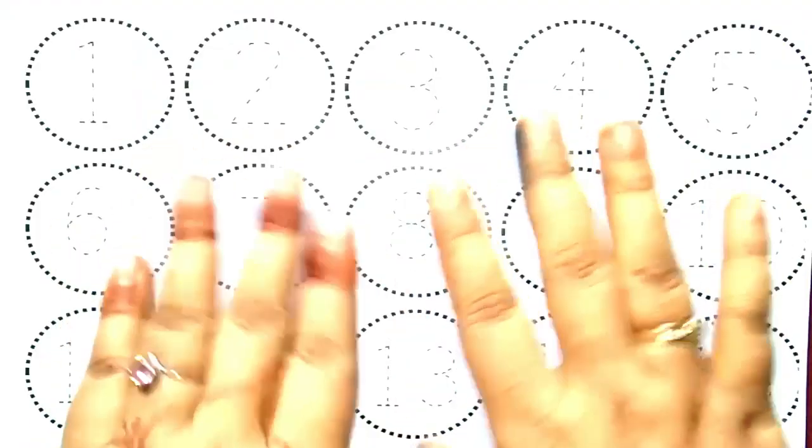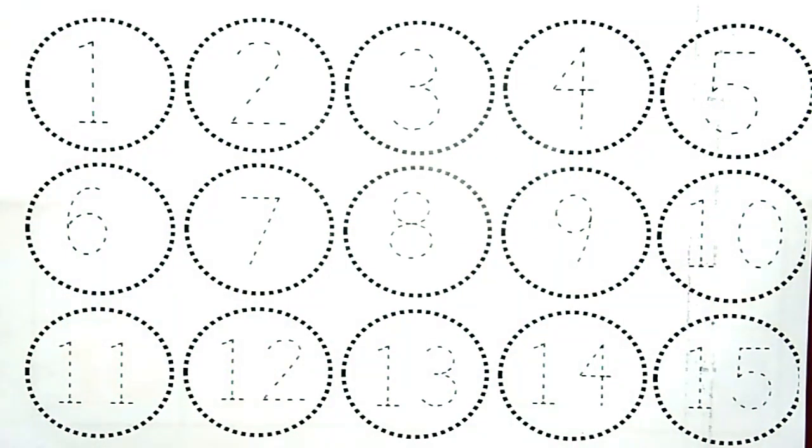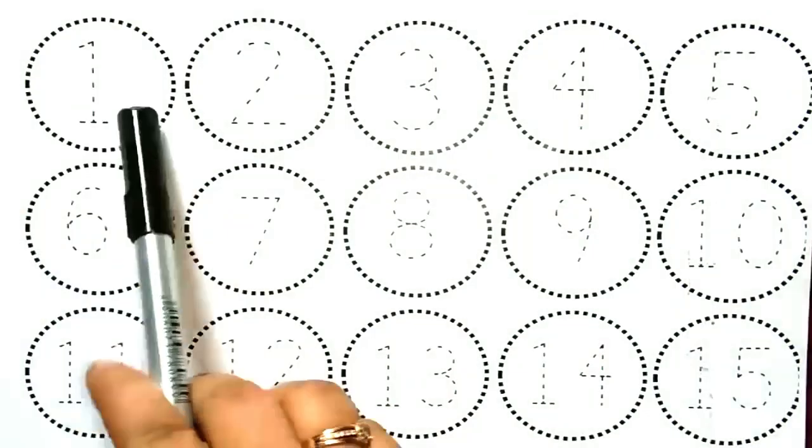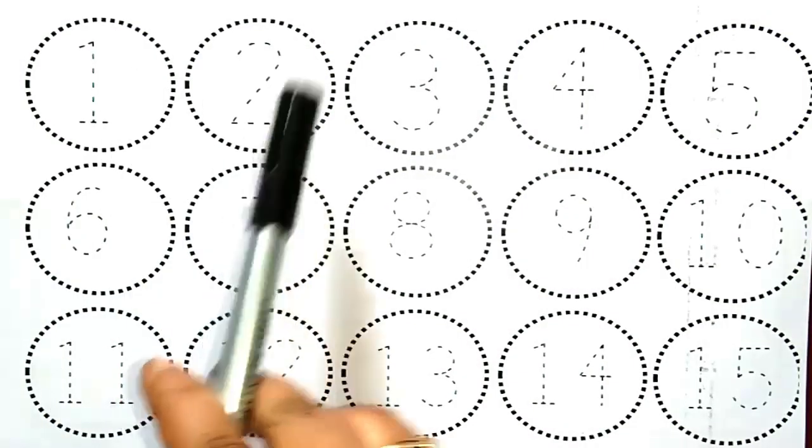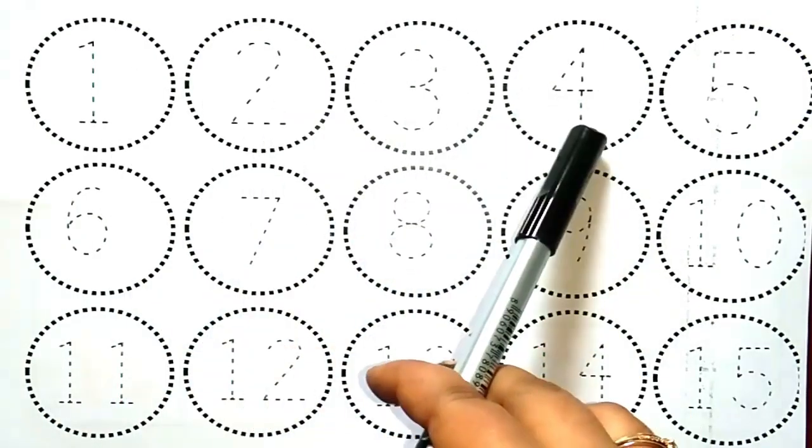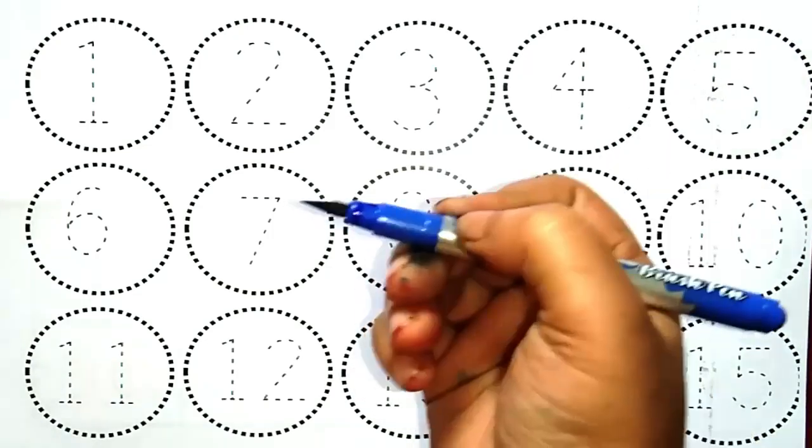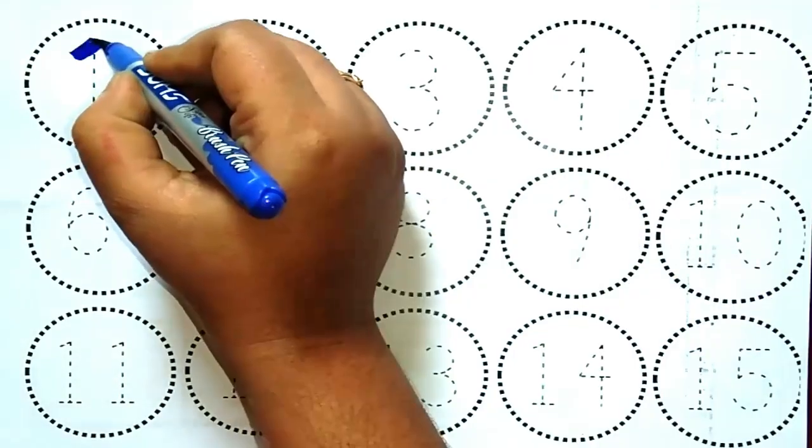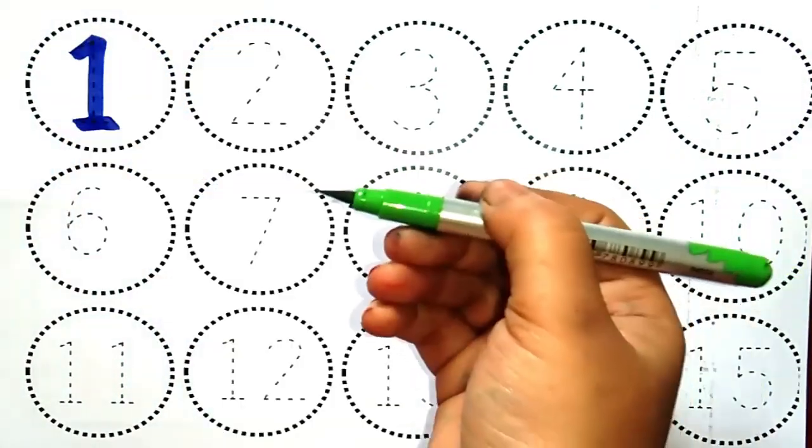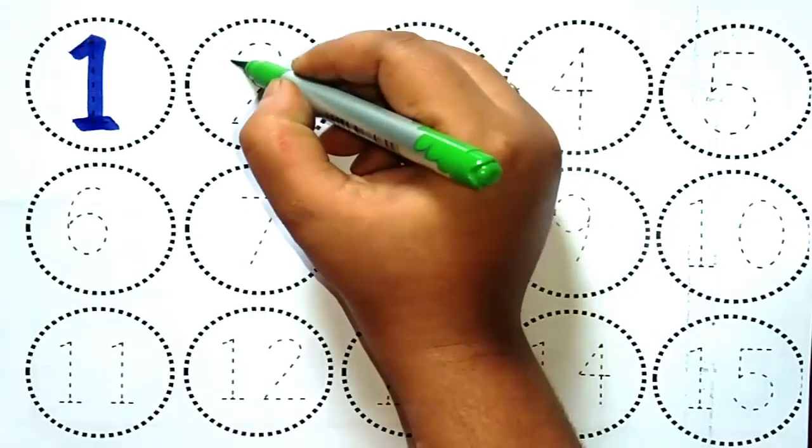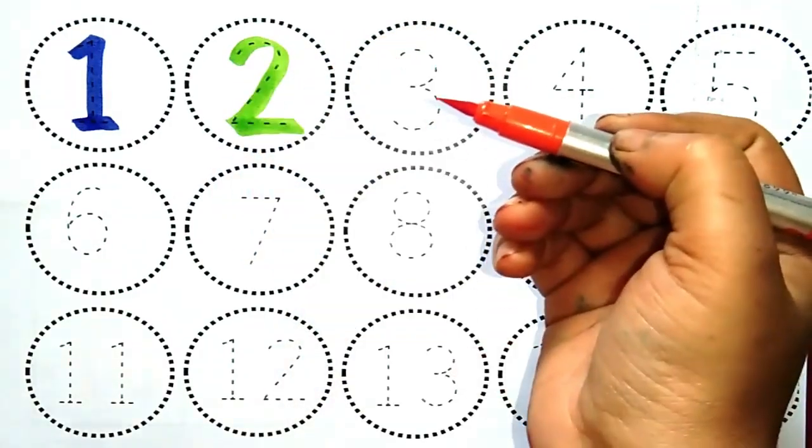Hello kids! Let's learn some numbers. One, two, three, four, five. Blue color number one, green color number two, orange color number three.